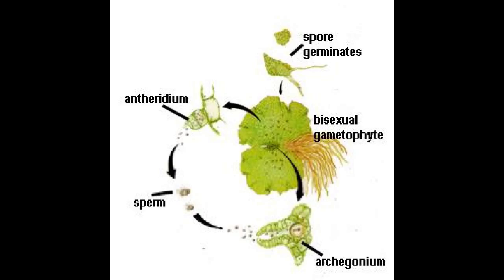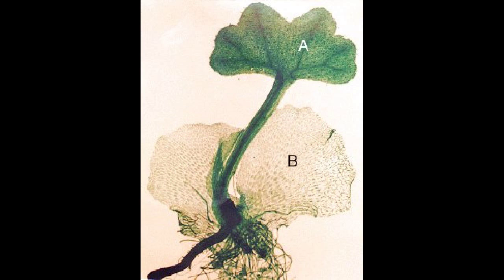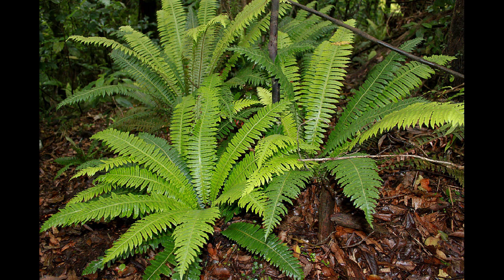After being released from the antheridia, the male gametes will swim through water to fertilize the eggs inside the archegonia. Once fertilized, the gametophyte will become a diploid zygote. Each zygote will then grow to become a new fern's sporophyte, and the reproductive cycle will begin again. Every new generation will progress through the alternation of generations.